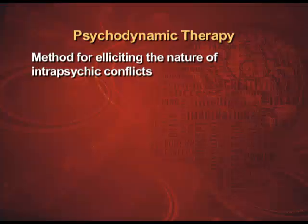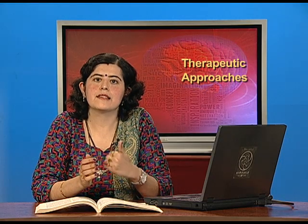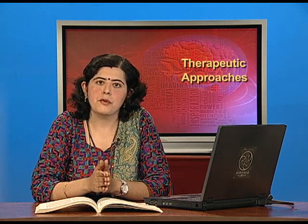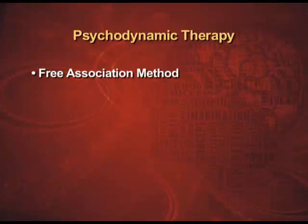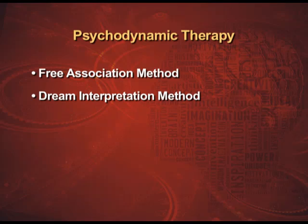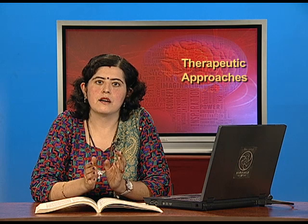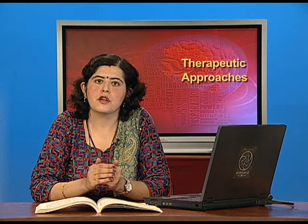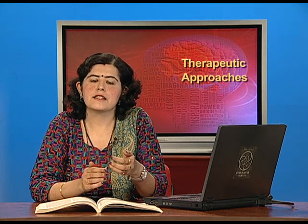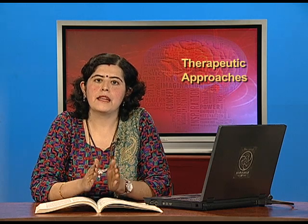Understanding the methods for eliciting intra-psychic conflicts — what does Freud believe as the reason for intra-psychic conflicts and how can we elicit them from the unconscious mind? There are two methods: the free association method and the dream interpretation method. Free association is very similar to hypnosis but is a modified, relatively better form of it. It involves associating all various thoughts without any kind of censoring.